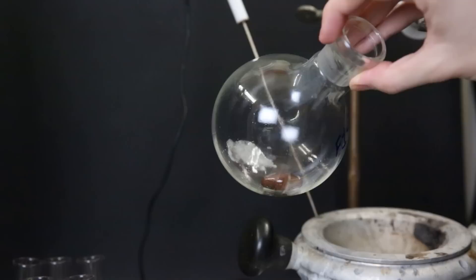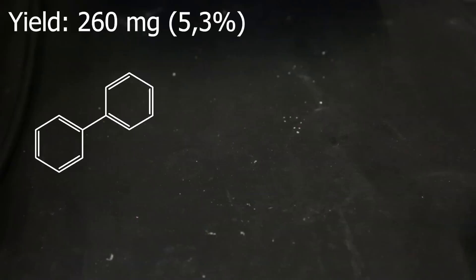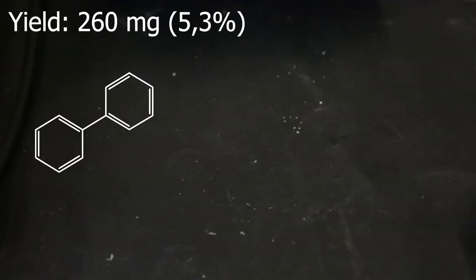After pretty much all of the solvent had been boiled off, I am left with a white solid at the bottom. I scraped off some of it, and dissolved the remaining bit in ether, and poured it into a crystallizing dish, and started boiling off all of the ether. When all of the ether is gone, the solid crystallizes out, which I scraped off and combined with the stuff from before. I put it all into a weighing boat, and the yield turned out to be 260 mg, which is 5.3%.